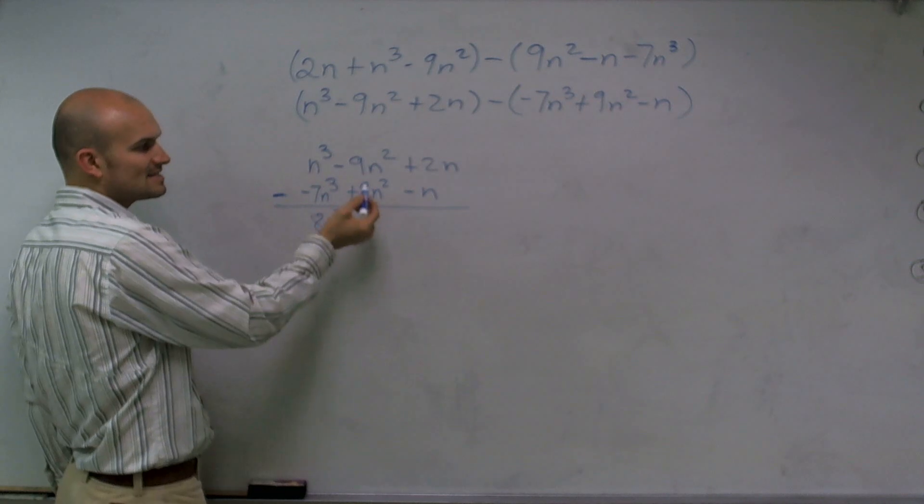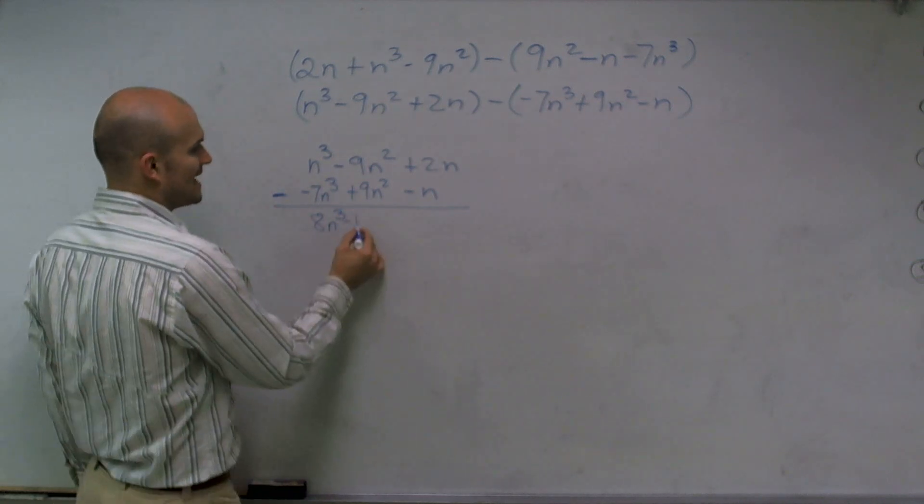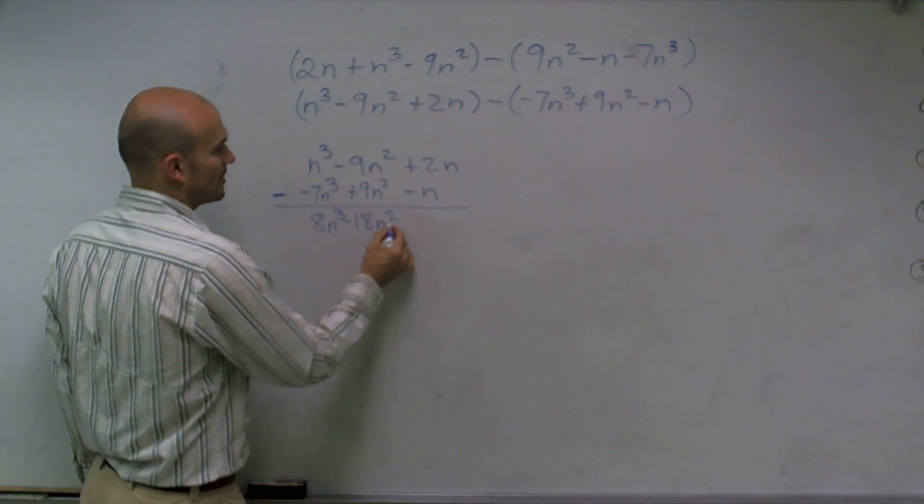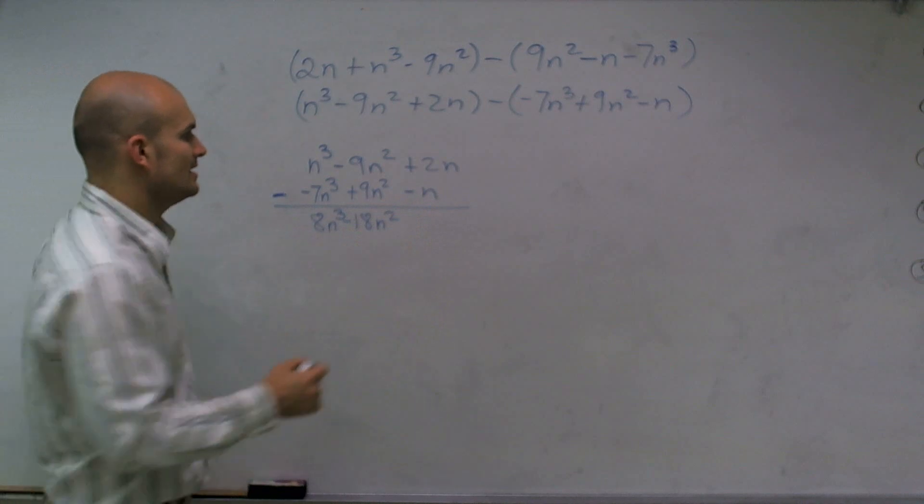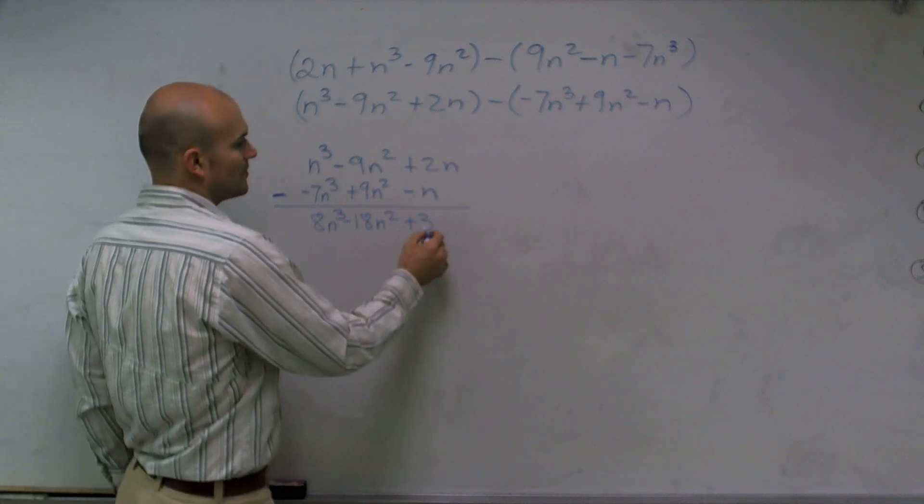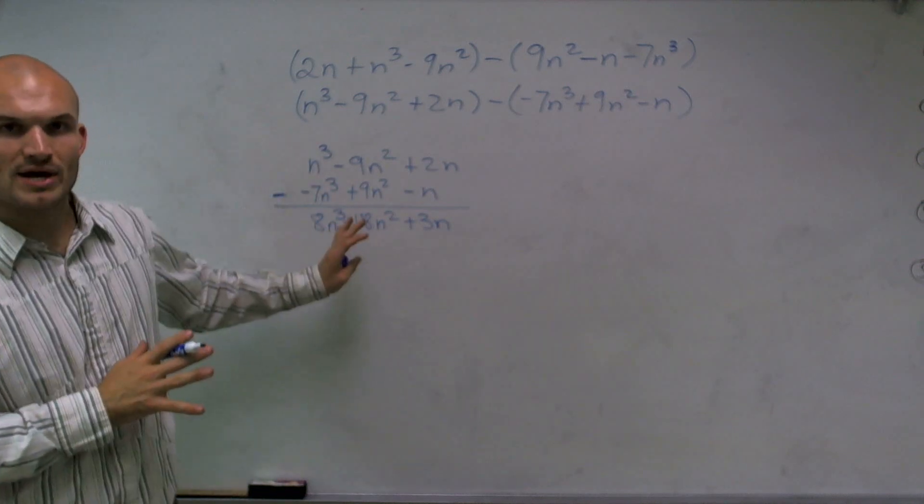Negative 9 minus a positive 9 is now going to give me a negative 18n squared, and 2n minus a negative n is going to give me a positive 3n. So this way works out great as long as you're really good with your subtraction.